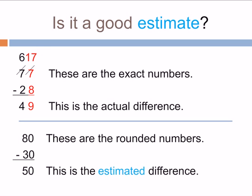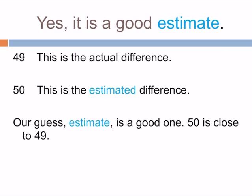Is it a good estimate? There are the exact numbers. And the actual difference was 49. And these are the rounded numbers at the bottom. And the estimated difference was 50. Yes, it is a good estimate. 49 and 50. Our estimate is a good one. 50 is close to 49.